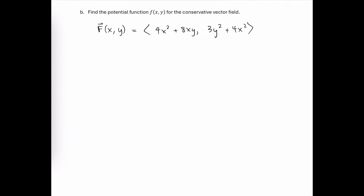In part b, we're looking for the potential function, which is a scalar function that has this conservative vector field as its gradient vector field. In other words, we're looking for the scalar function f(x, y) such that its gradient vector field is the same as our vector field that we just found.